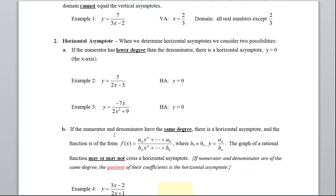In the B part, if the numerator and denominator have the same degree, there is a horizontal asymptote. And the function is of this form. Now remember we had this back when we were looking at just a generic form of a polynomial.